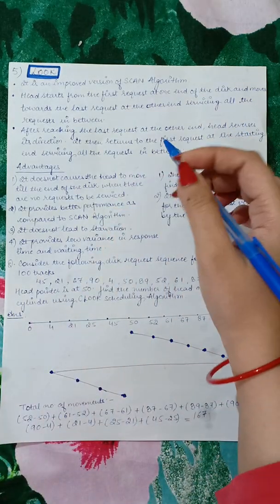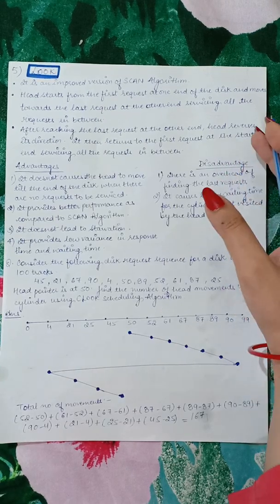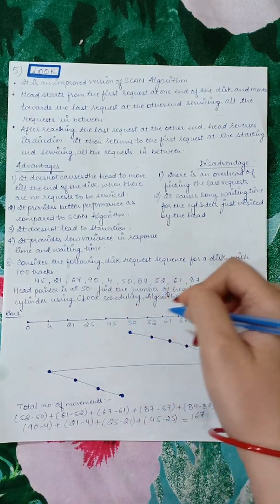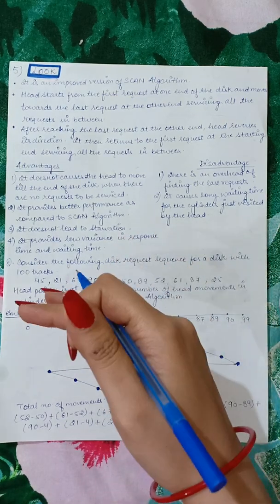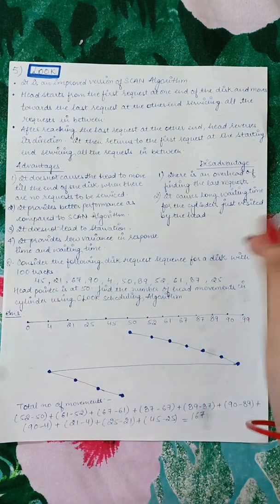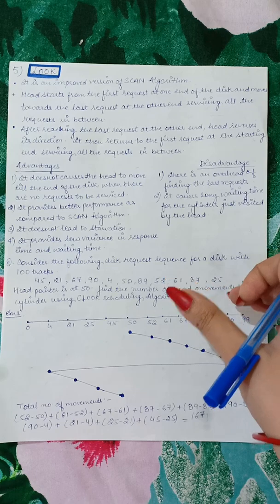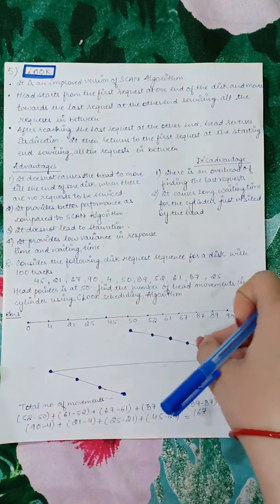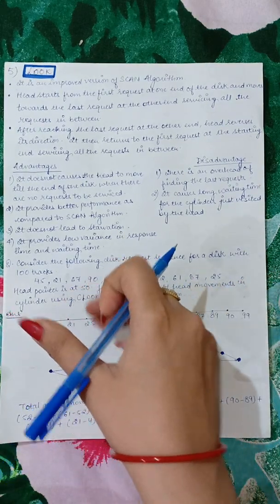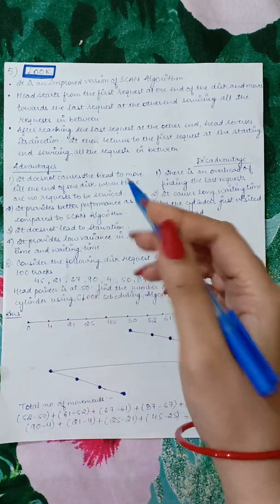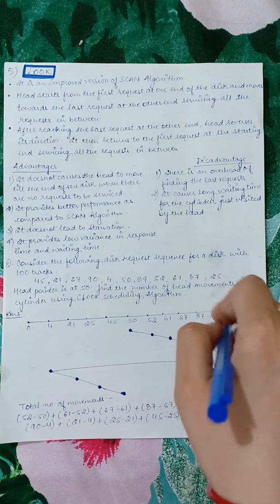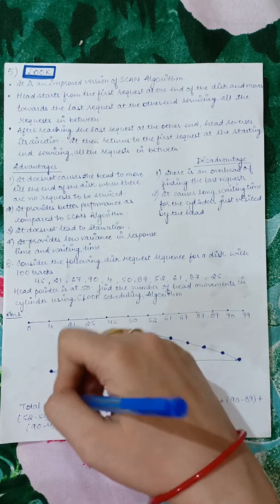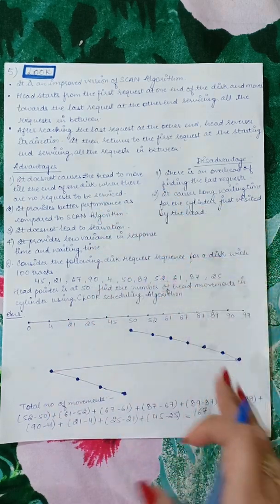The next topic on disk scheduling algorithms is the LOOK scheduling algorithm. It is an improved version of the SCAN algorithm. In SCAN, when the head movement starts in one direction — either right or left — it completely scans and services tracks to the end of the disk, then reverses direction and fulfills the remaining requests. There was a further improvement called C-SCAN, in which no request is fulfilled in the reverse direction and the head services to the end of the disk.